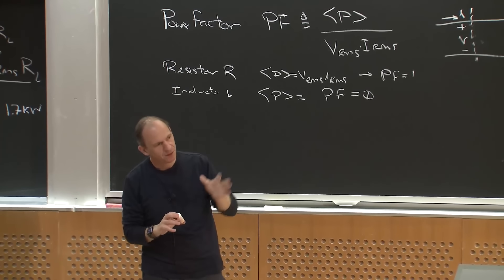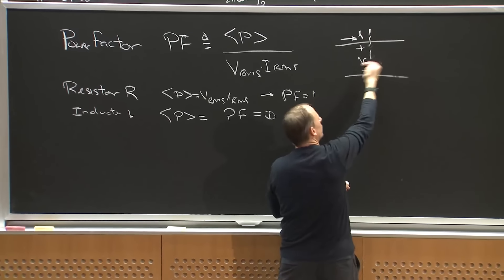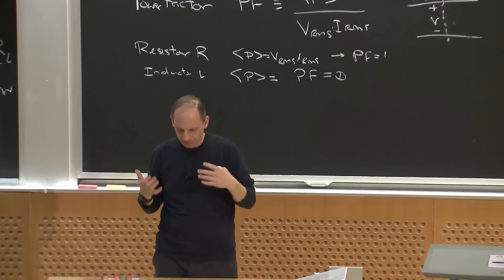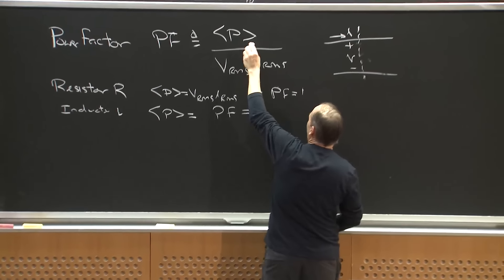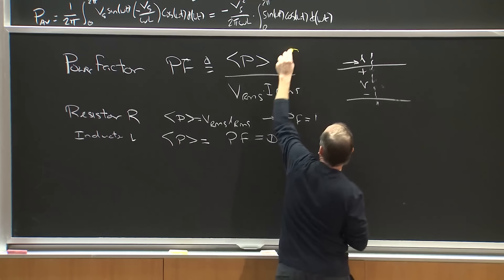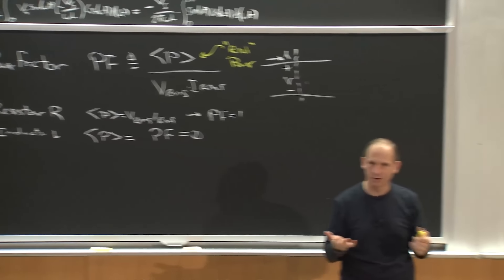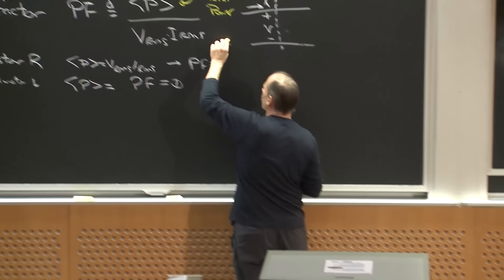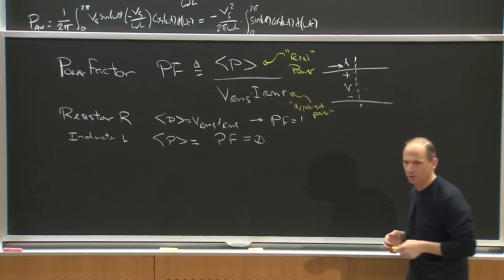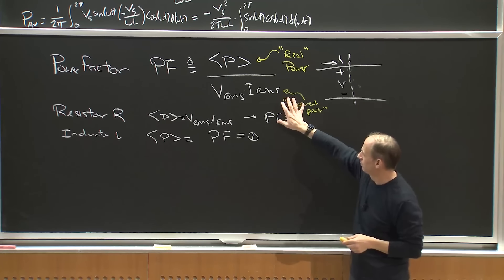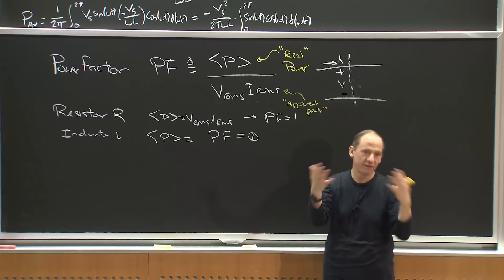Power factor can technically be between 1 and −1; a negative value would suggest power is flowing the other way. This average power is sometimes called 'real power.' V_RMS times I_RMS is what's known as 'apparent power,' which is greater than or equal to the real power. Apparent power is what effective power you'd be drawing if that much current and voltage were going into a resistive load.